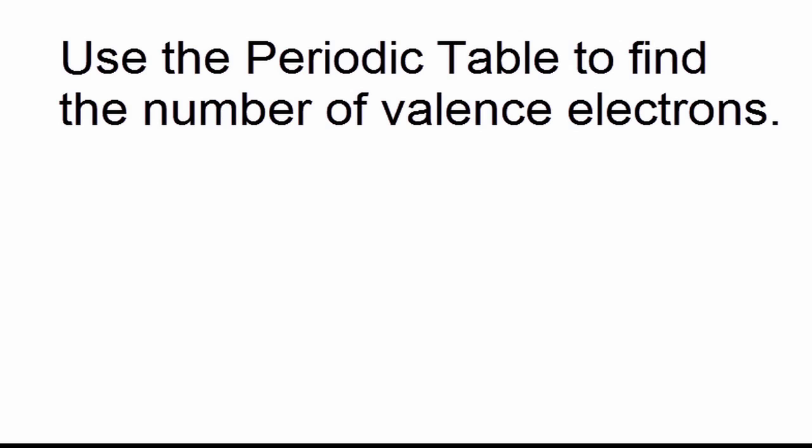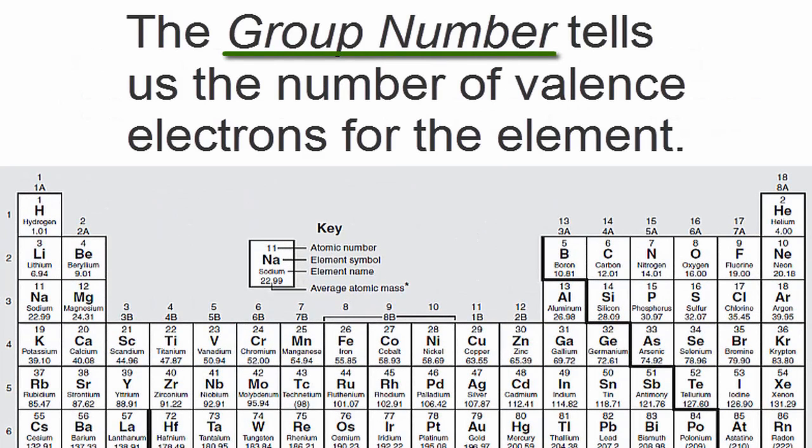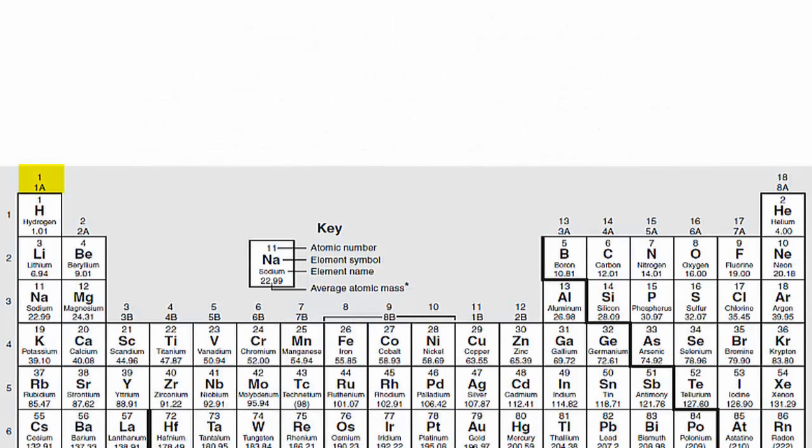We can find the number of valence electrons using the periodic table. The group number tells us the number of valence electrons for the element. For example, hydrogen has one valence electron because it's in group 1, sometimes called 1A.